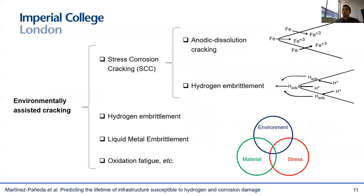Before I start showing some examples of applications, let me clarify the terminology I will be using. I'll be mostly focusing on two environmentally assisted cracking phenomena: hydrogen embrittlement and pitting and cracking due to anodic dissolution. I will look into individual progress in these two areas, but I will also briefly discuss how to model both in a coupled manner. Hydrogen embrittlement appears twice here, because it can be categorized as stress corrosion cracking when hydrogen enters the material as a result of corrosion processes, or it can also happen in the absence of an aqueous electrolyte, such as when components are exposed to hydrogen gas.